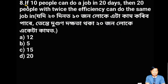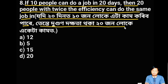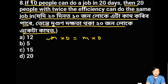If 10 people can do a job in 20 days, then 20 people with twice the efficiency can do the same job in how many days? If we have 20 people with twice the efficiency doing the same job, we are trying to make sure the total comes to 20 days.